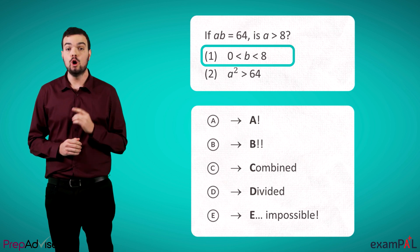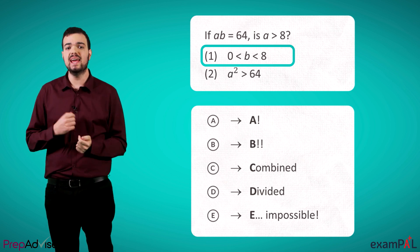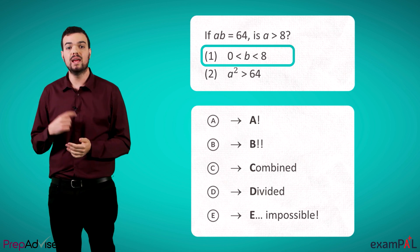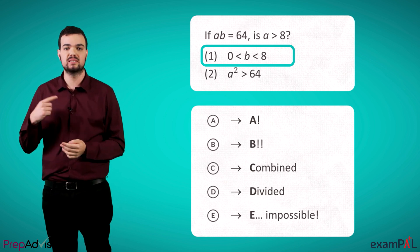First of all, knowing b is positive tells us that a must be positive as well in order for a times b to equal 64.